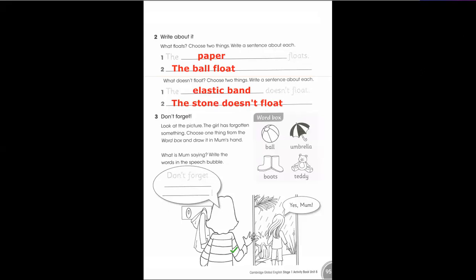Question number three: look at the picture. The girl has forgotten something. Choose one thing from the word box and draw it in the mom's hand. What is mom saying? Write the word in the speech bubble. Don't forget raincoat or you can say umbrella right here, umbrella because it is raining outside. U-M-B-R-E-L-L-A, umbrella. Mom is saying don't forget umbrella because it is raining outside and the girl is saying yes, mom.